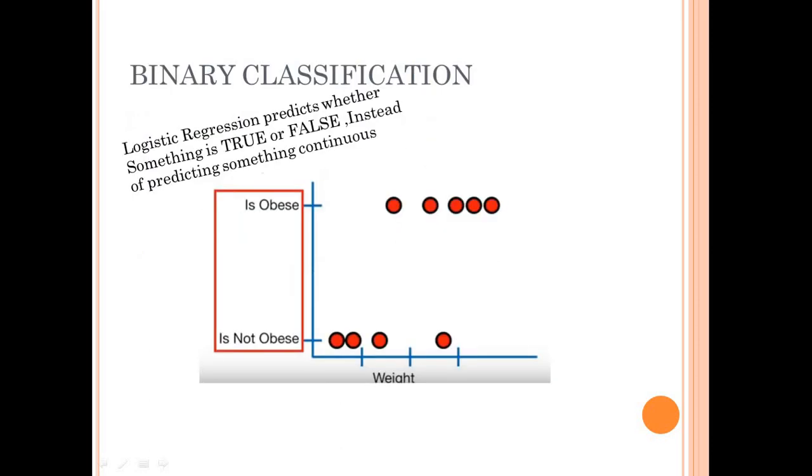Logistic regression predicts whether something is true or false instead of predicting something continuous. The below is the data of a mouse. The above data shows that the mouse is obese, whereas the below data shows that the mouse is not obese.